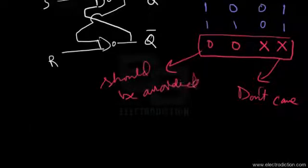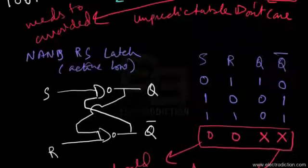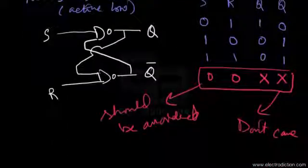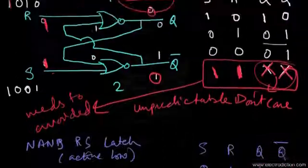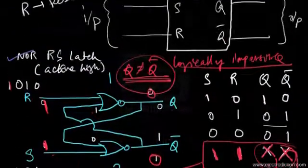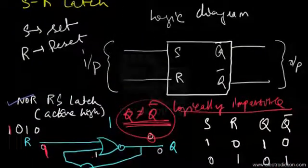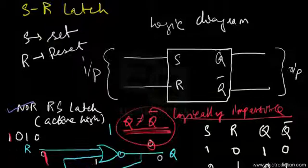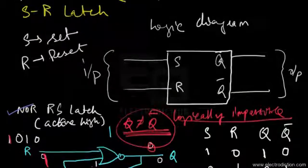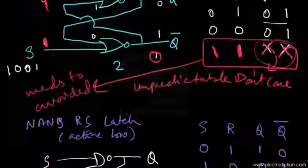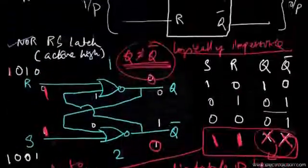The don't care state in the NAND RS latch — just as in the NOR RS latch — should be avoided, as outputs become unpredictable. That concludes the tutorial on the RS latch. Don't forget to watch the next tutorial on digital electronics. Thank you and goodbye.